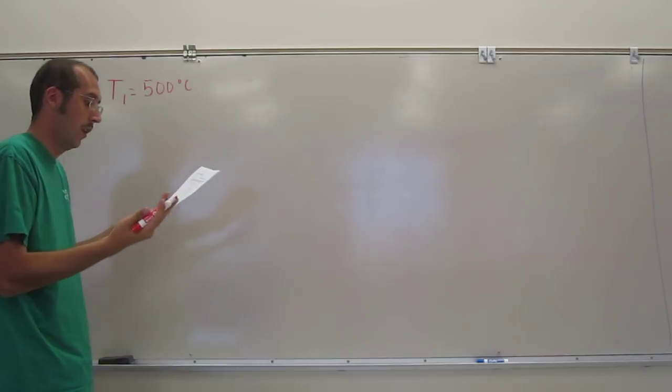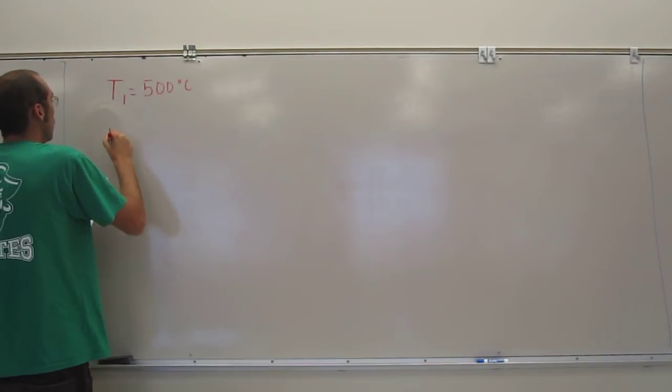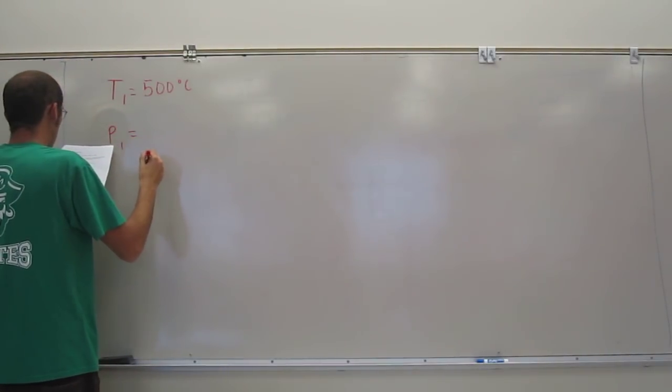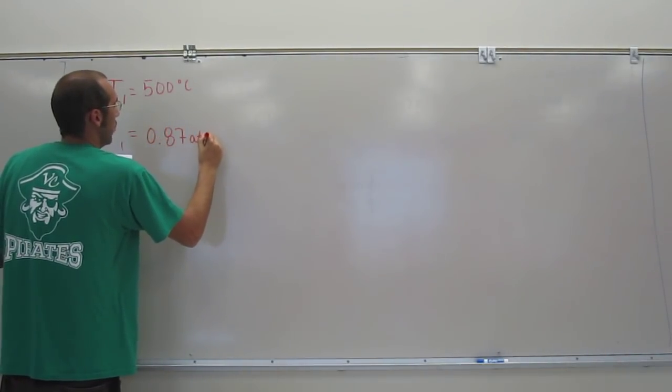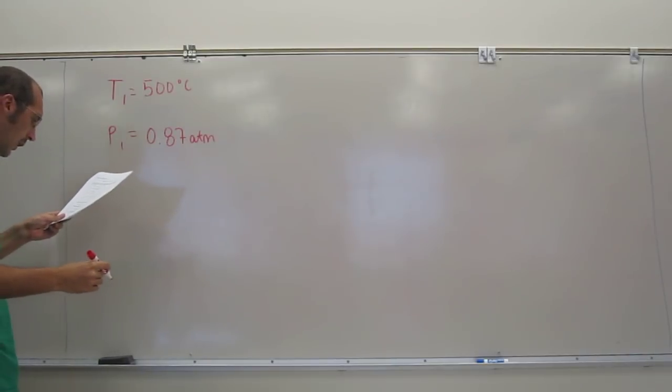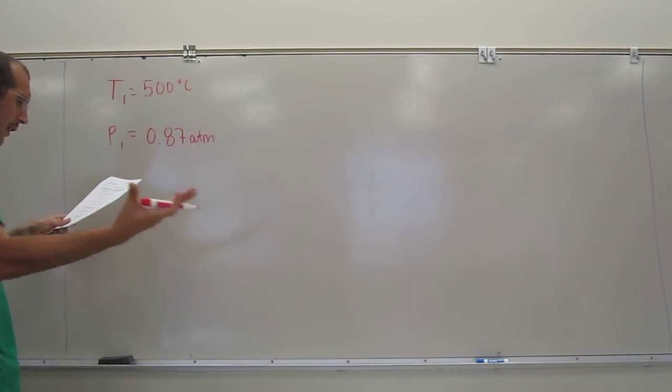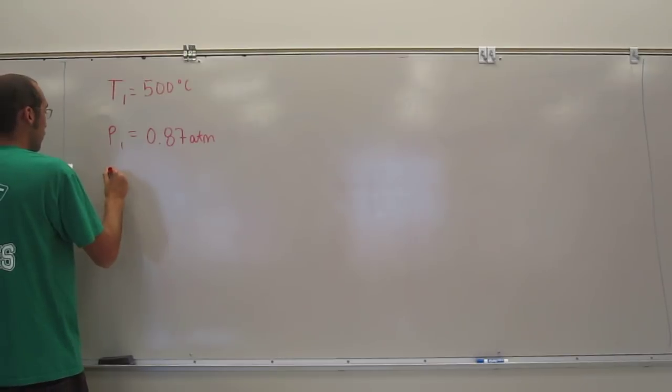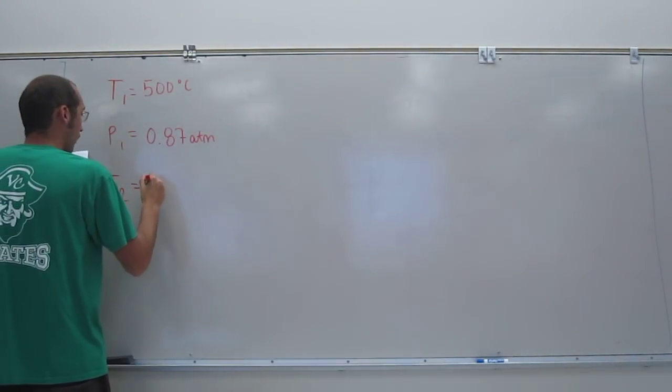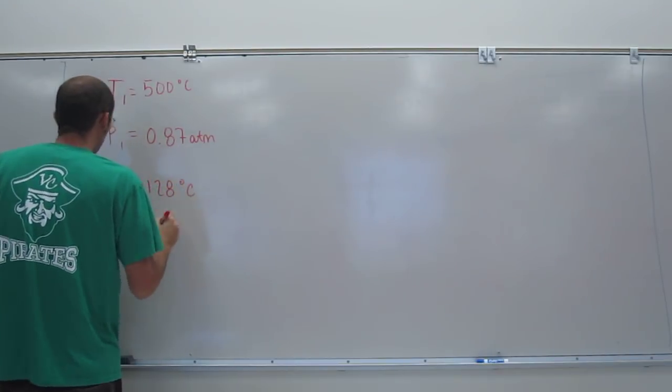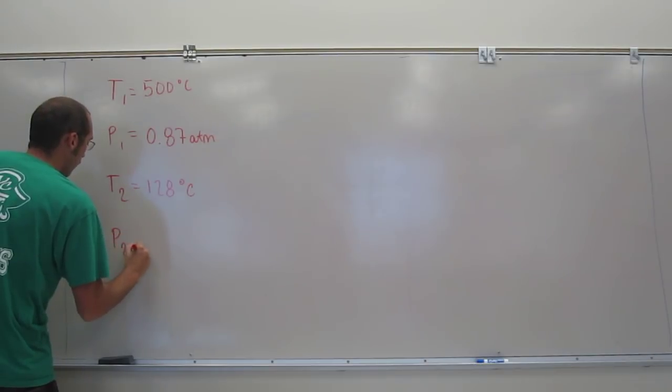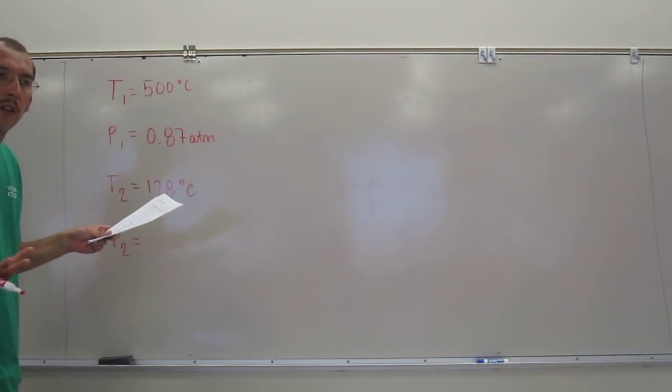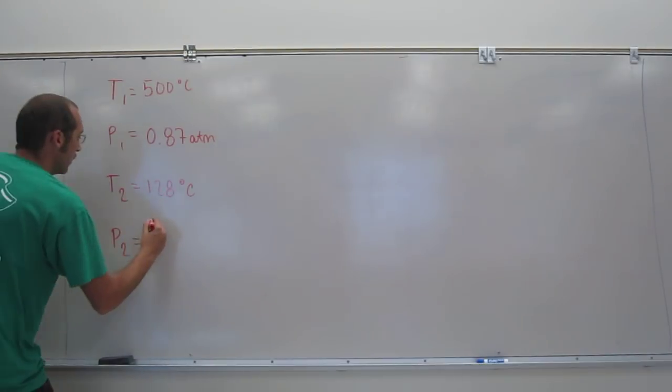And we know P1, it says it's 0.87 ATM. What else do we know? We know T2, the temperature that it changed to, 128 degrees Celsius. And P2, it asks what's the new pressure of the gas. So that's what it's looking for.